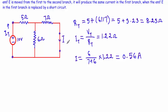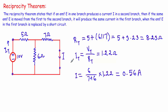Now let me prove this theorem using a common example. Let's say I have three resistances: 5 ohm, 7 ohm, and 6 ohm, and the resistances are supplied by a voltage source of 10 volts. I will calculate the current through the branch in which the 7 ohm resistance is connected. To calculate that current I first have to calculate the total current, which means dividing total voltage by total resistance. The voltage source is connected across two terminals.